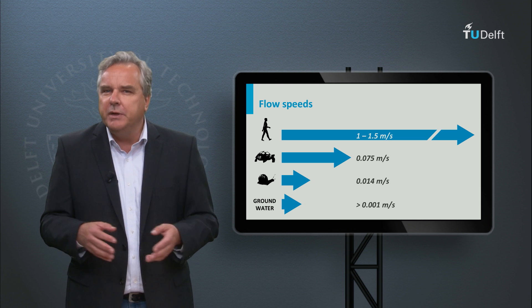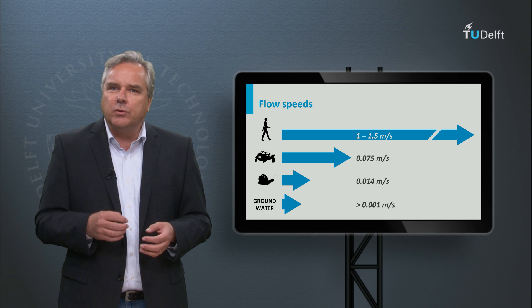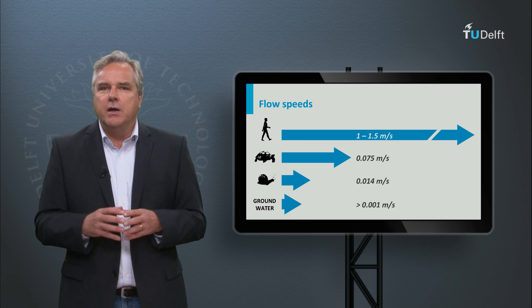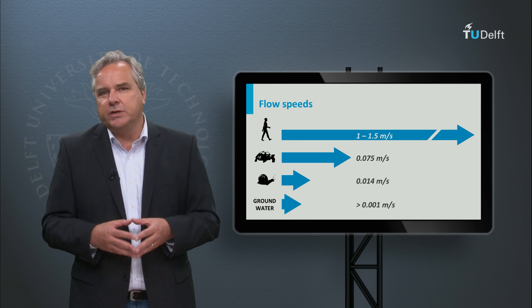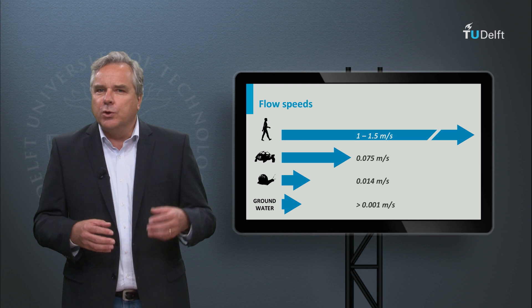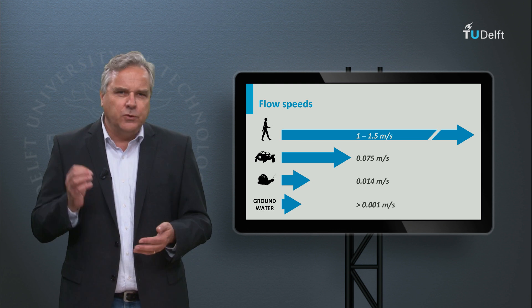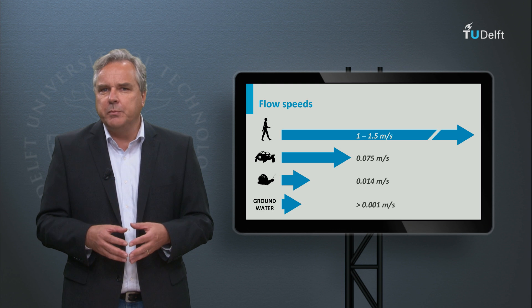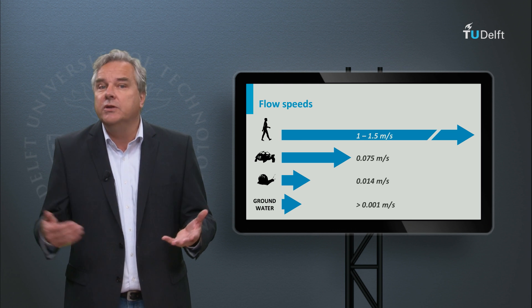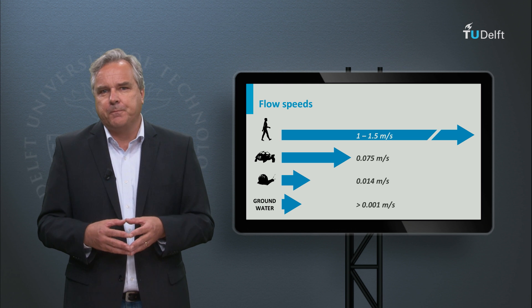Often speeds of 1 meter per day or less can be found. The fact that groundwater flows at such low speeds means that it functions as an underground reservoir that we can tap. The water is there and does not flow away quickly. The low speed also implies that we can easily overexploit groundwater, as water will not quickly flow in from far away.